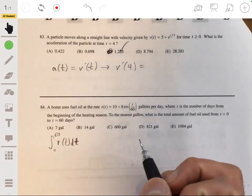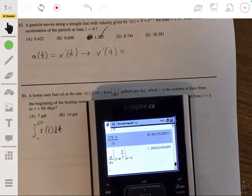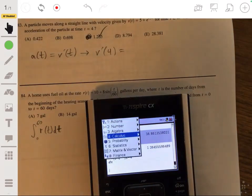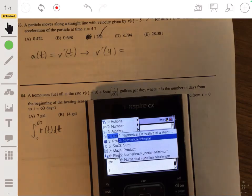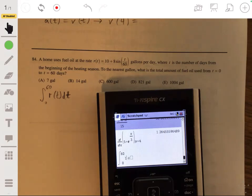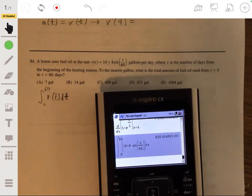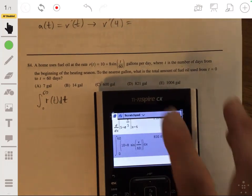So here we can just use our calculator again. We set up an integral. Let's go to this numerical integral. So from 0 to 60. And for this function, 10 plus 8 sine of x over 60 dx. And we get about 820.65. So to the nearest gallon, that will be 821.